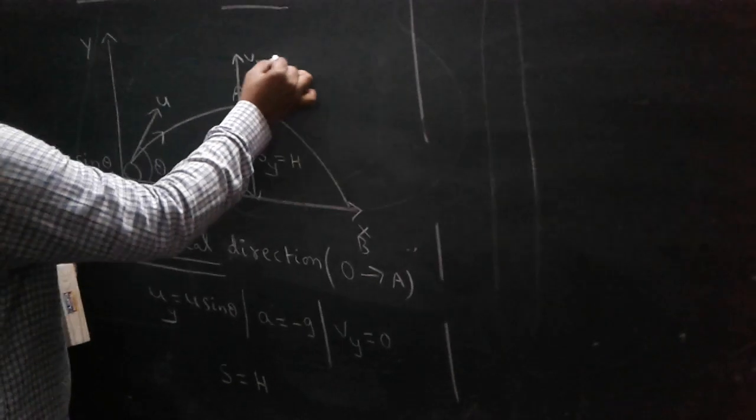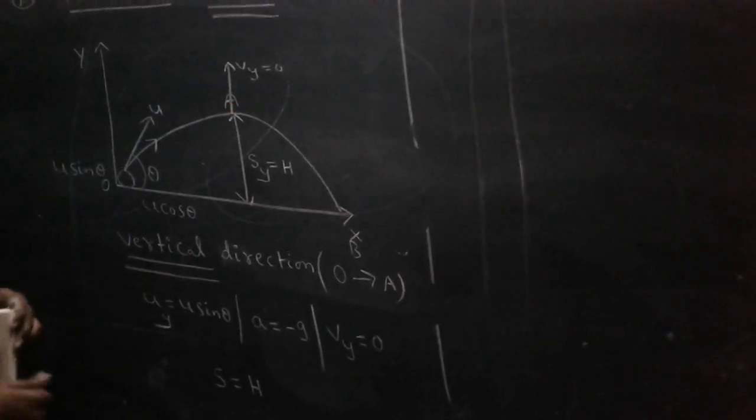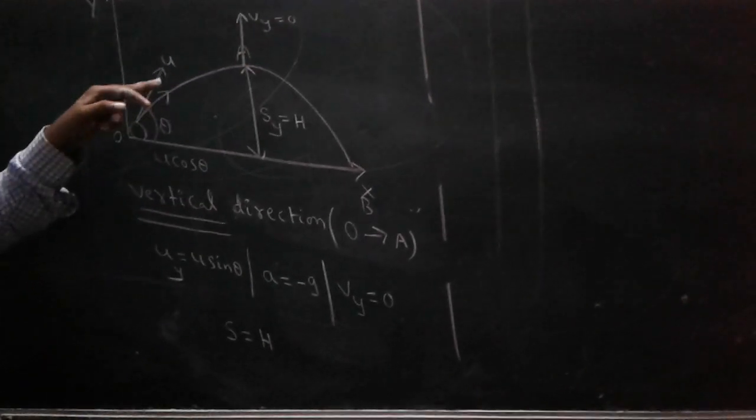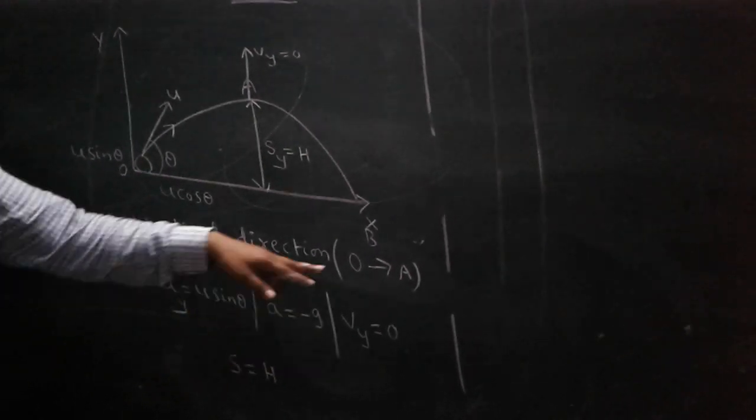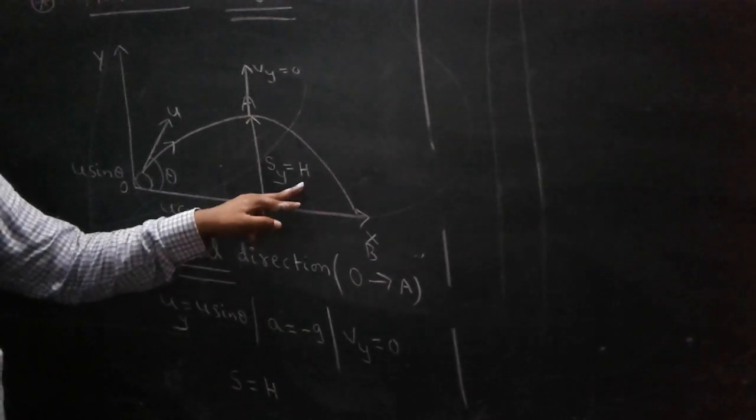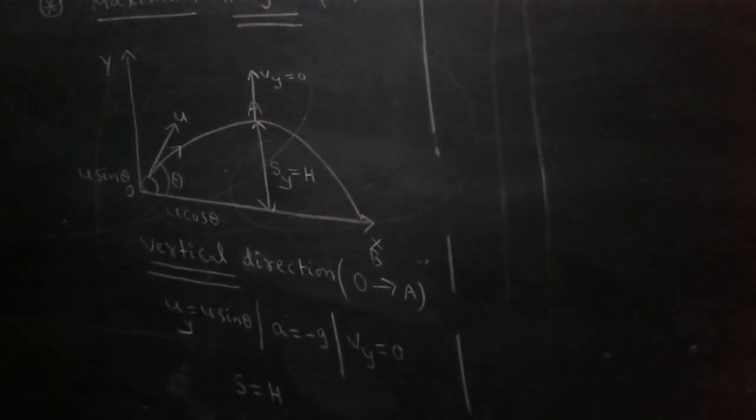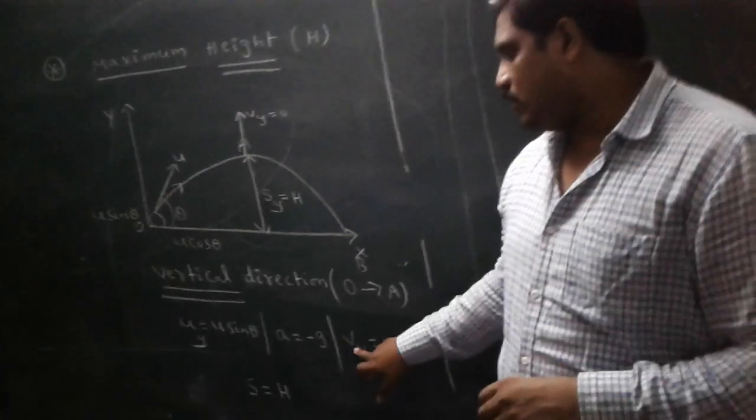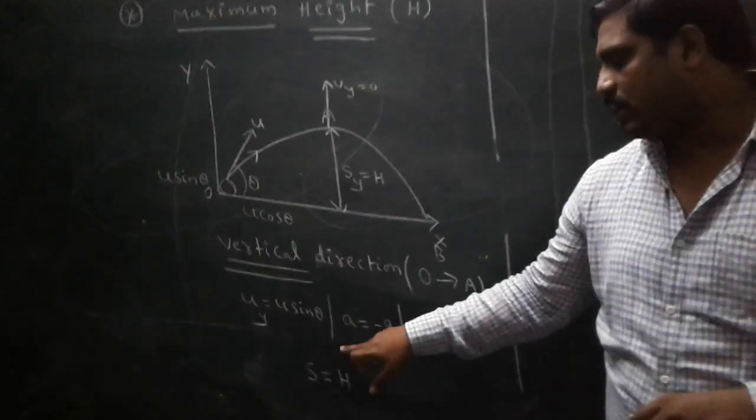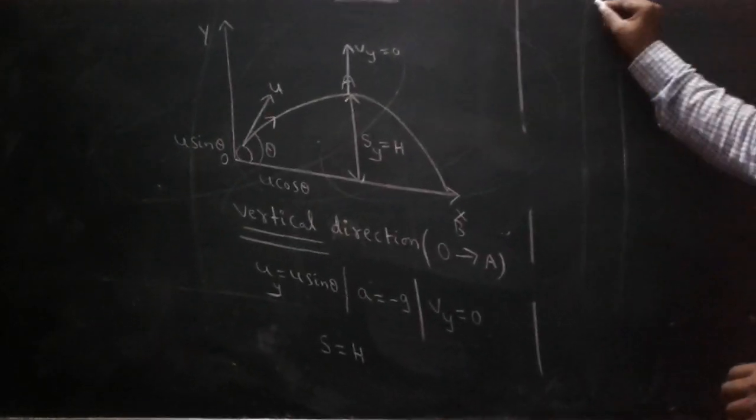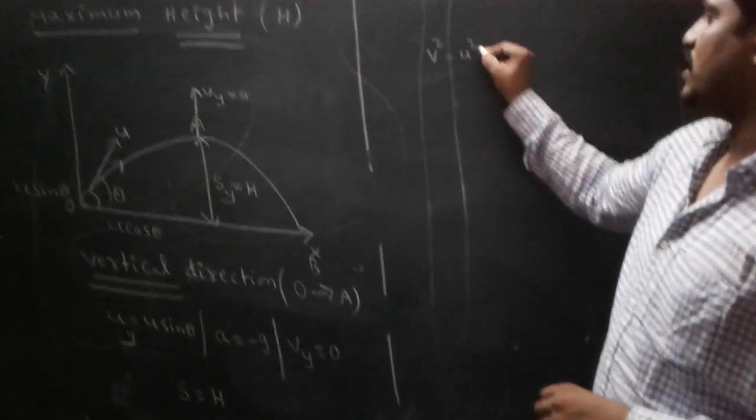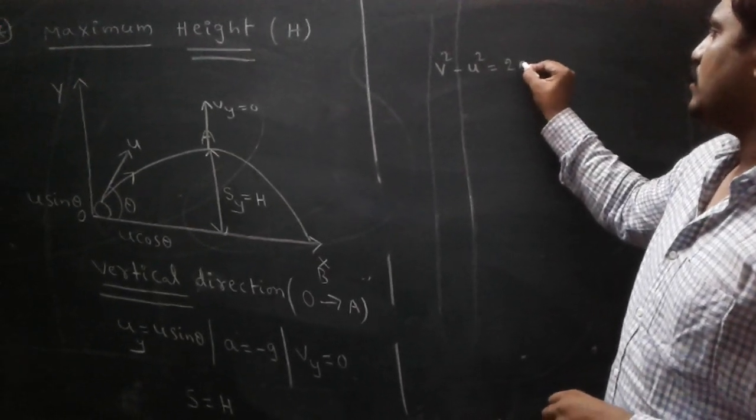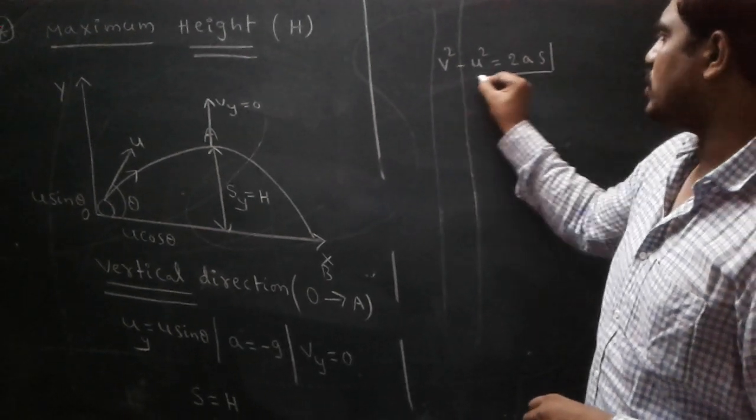We know that according to the data: V, U, A, S. The kinematic third equation: V² - U² = 2AS.